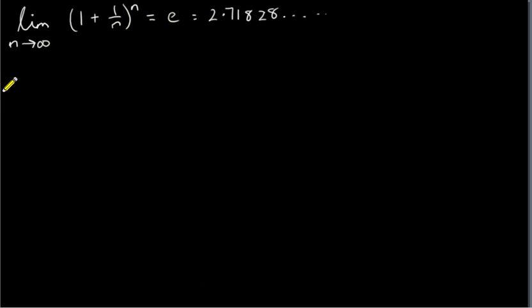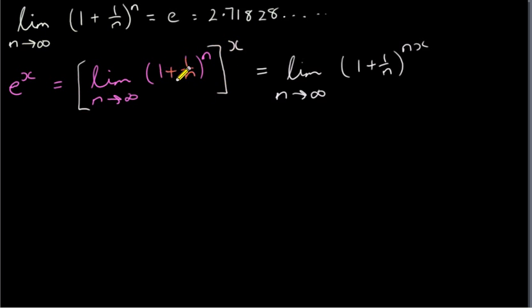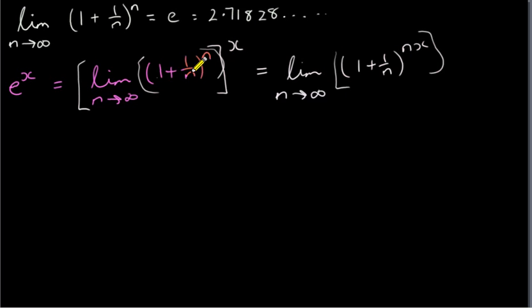Now, what about e to the power of x? For the function y = e^x where x is any number, we take this limit and raise it to the power of x. From the theory of limits, if we take a limit and raise it to the power x, that's the same as calculating the limit of (1 + 1/n)^(nx). We just multiply n by x inside and calculate that limit.